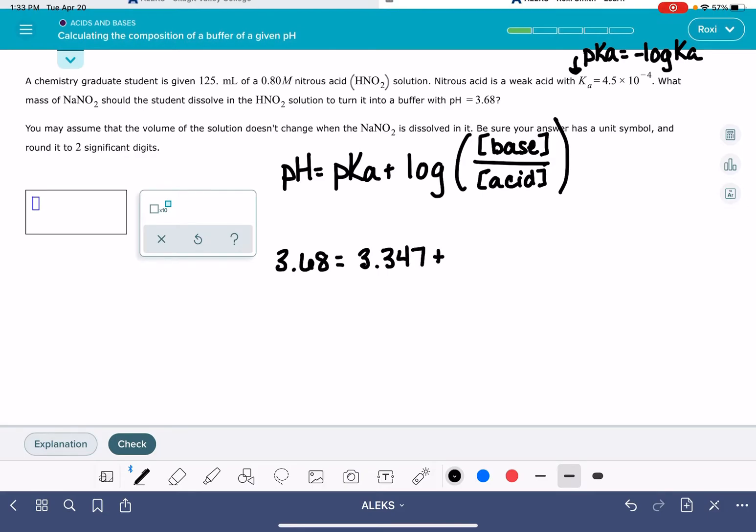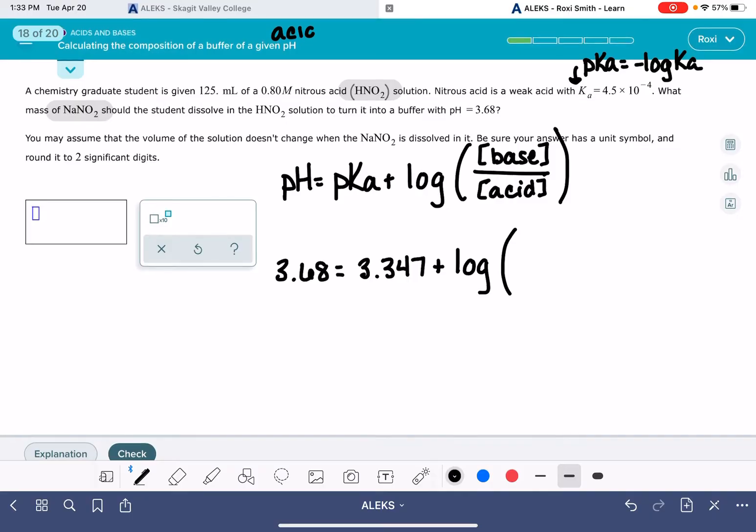And then last but not least, I need to plug in the concentration of the base and the concentration of the acid. So the next real hurdle here is for us to figure out between these two molecules, which one is the acid, which one is the base. The acid is always going to be the molecular formula that has one more hydrogen than the formula for the base.